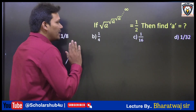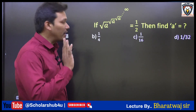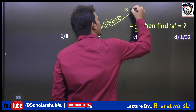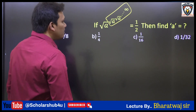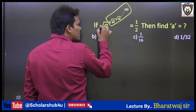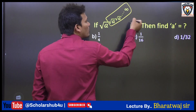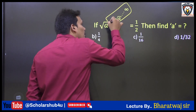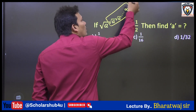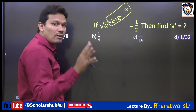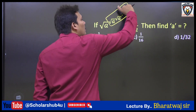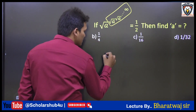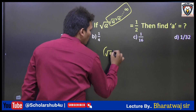Let us solve the problem. We need to find out the repeating part. From the problem we can conclude that this part — root a power root a power root a, so on up to infinity — is going to be repeated. Since this part equals 1 by 2 (as already given), we substitute it: root a whole power 1 by 2 is equal to 1 by 2.